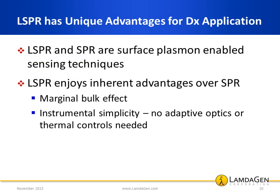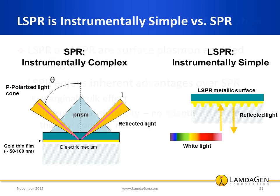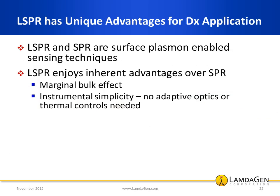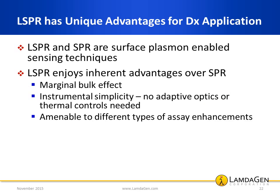Second, LSPR can be performed with simple instrumentation. There is no need for adaptive optics — in fact, room light and the human eye are sufficient to observe some reactions. Further, the LSPR signal is largely temperature-independent, so there is no need for thermal controls. Third, LSPR is unique in that amplification steps performed in serum, plasma, urine, or saliva generate precise signals that can be measured for precise target quantitation. Thus, ELISA, for example, can be performed on LSPR with exquisite sensitivity and assay precision.